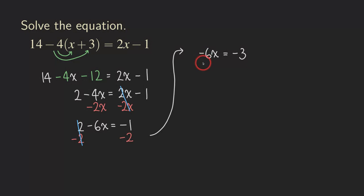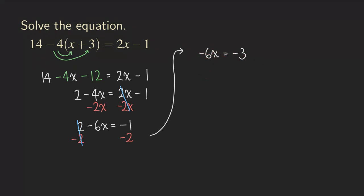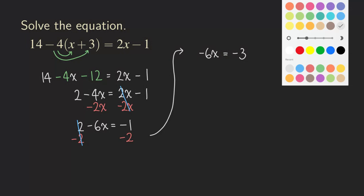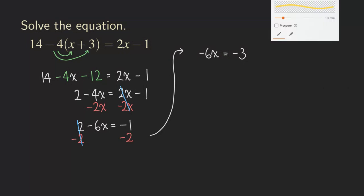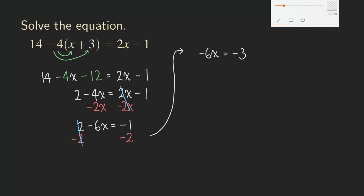So this time, we are not doing addition or subtraction. We are actually doing division. And so let's divide both sides by negative 6. Whatever that number that's attached to the x, then we are going to be dividing by that number. So let's divide by the coefficient of the x.